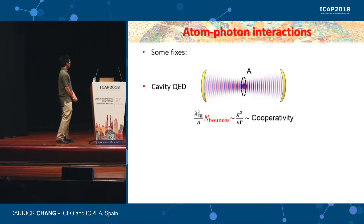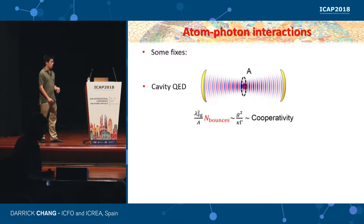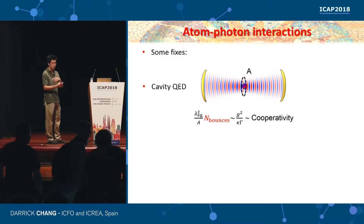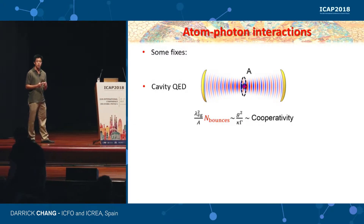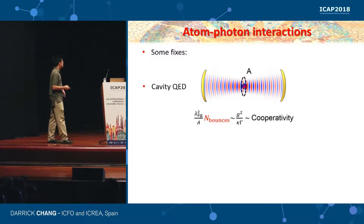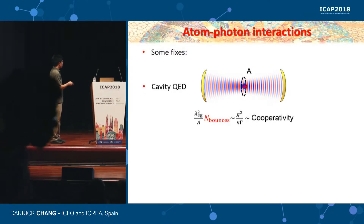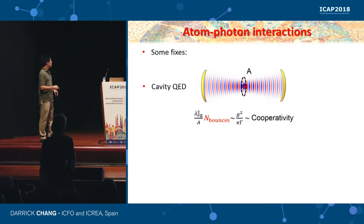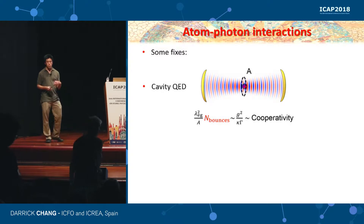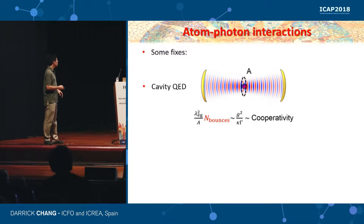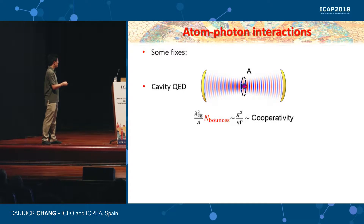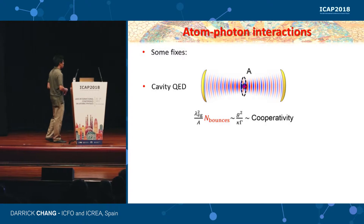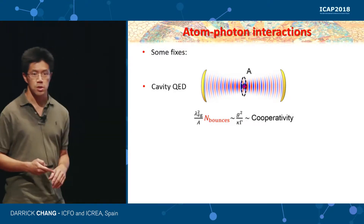There are some well-known fixes. One is cavity QED: you place the atom between two very good mirrors, so the photon doesn't just pass the atom once but hits it over and over again. The interaction is that of a single photon on a single pass times the number of bounces. This figure of merit — the cooperativity factor in cavity QED — is a very important parameter describing how good your system is.